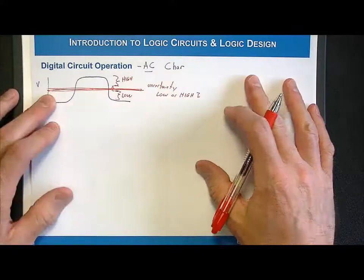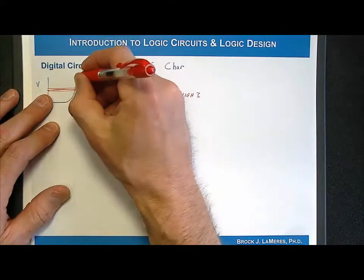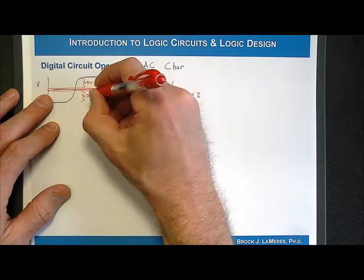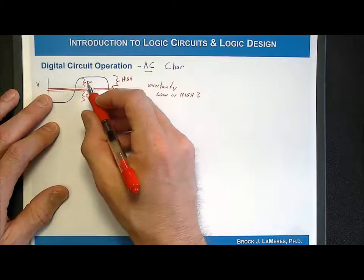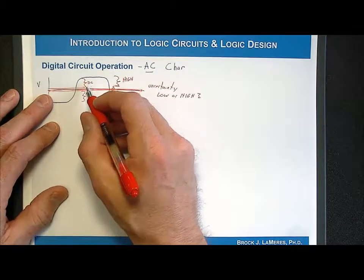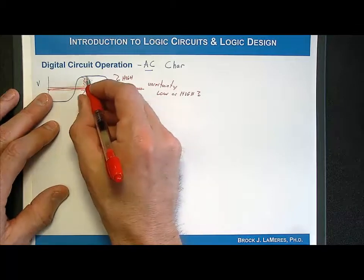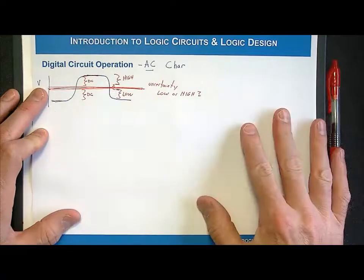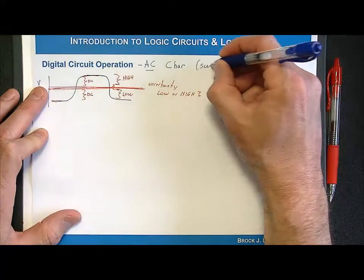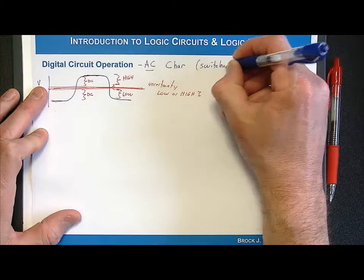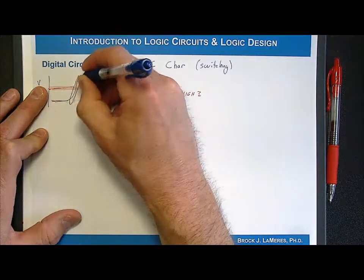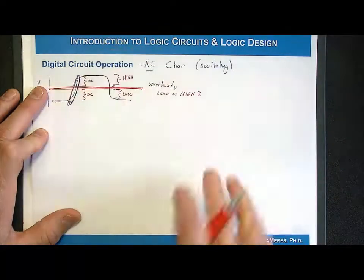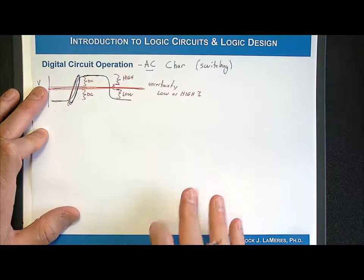These ranges right here are where it's defined to be a high and where it's defined to be a low, and that is interpreted as a high or a low by the receiver. But in a real circuit they never really touch each other, so there's this region in between where we say we really don't know whether it's a high or low. This is why we call it the uncertainty region.